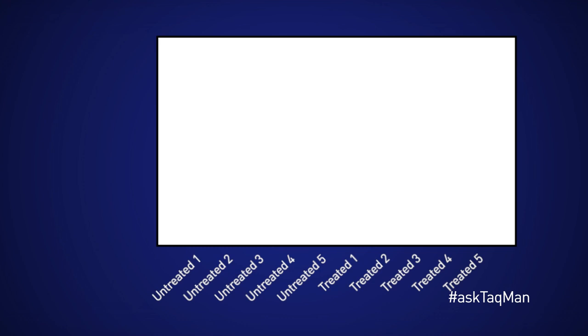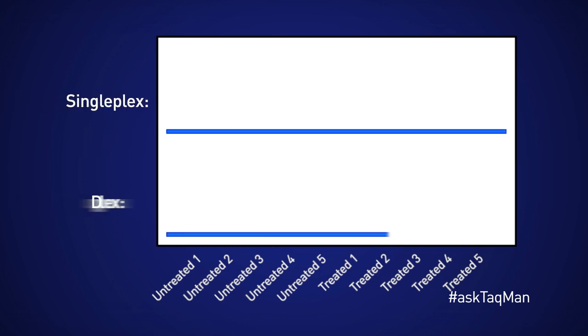Now that said, you should still run some tests to make certain that combining assays doesn't affect final results. My suggestion? Take several of your samples, maybe 5 or 6 untreated plus 5 or 6 treated, and amplify them all with both of your assays in singleplex and in duplex.